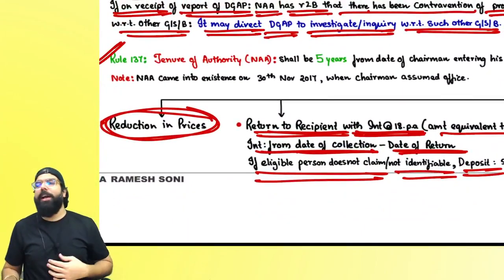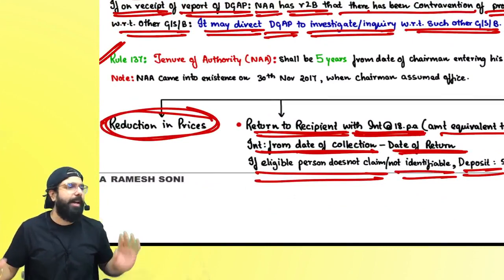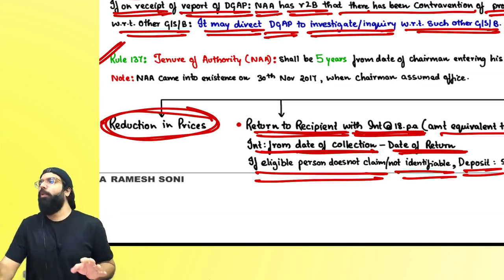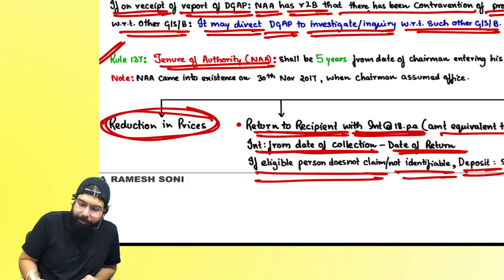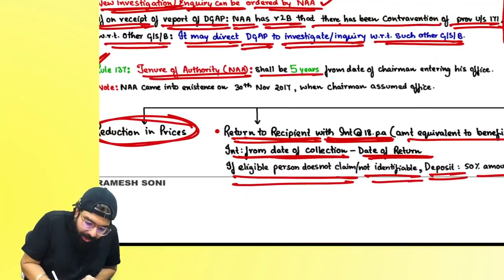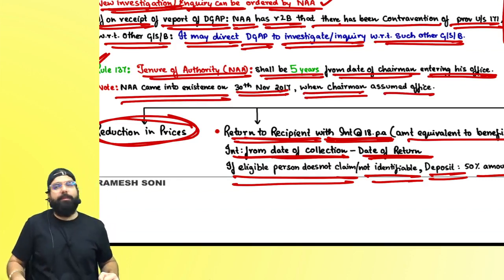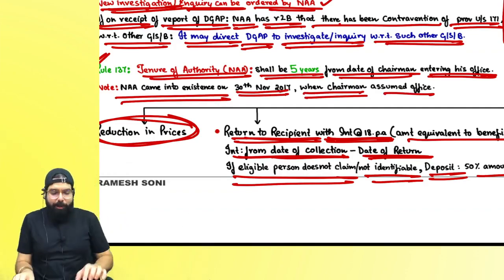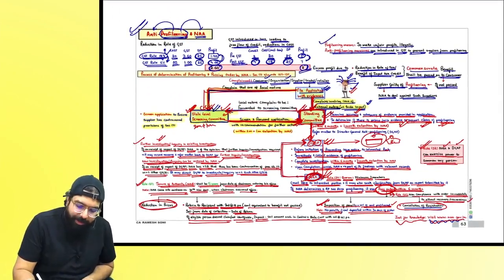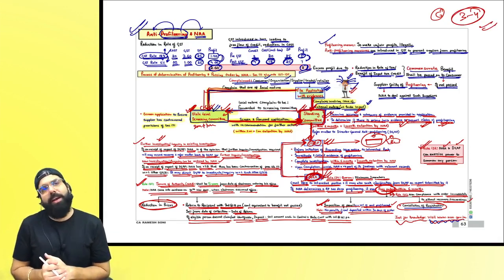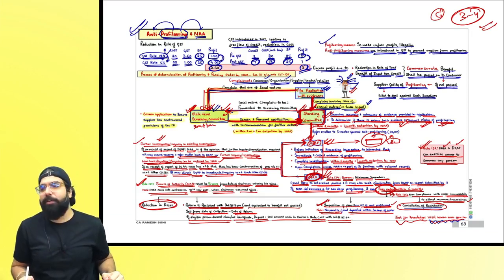Now the amendment: the government had said the National Anti-Profiteering Authority will be there for only four years. Four years of GST passed and people are still doing profiteering — they are not able to rectify. So the tenure was extended. Earlier the tenure was four years. Amendment for exam — now it is five years from the date the Chairman enters office. The chairman assumed office on 30th November. This is a C-graded topic overall but anti-profiteering authority is A-graded — expect 3 to 4 marks.